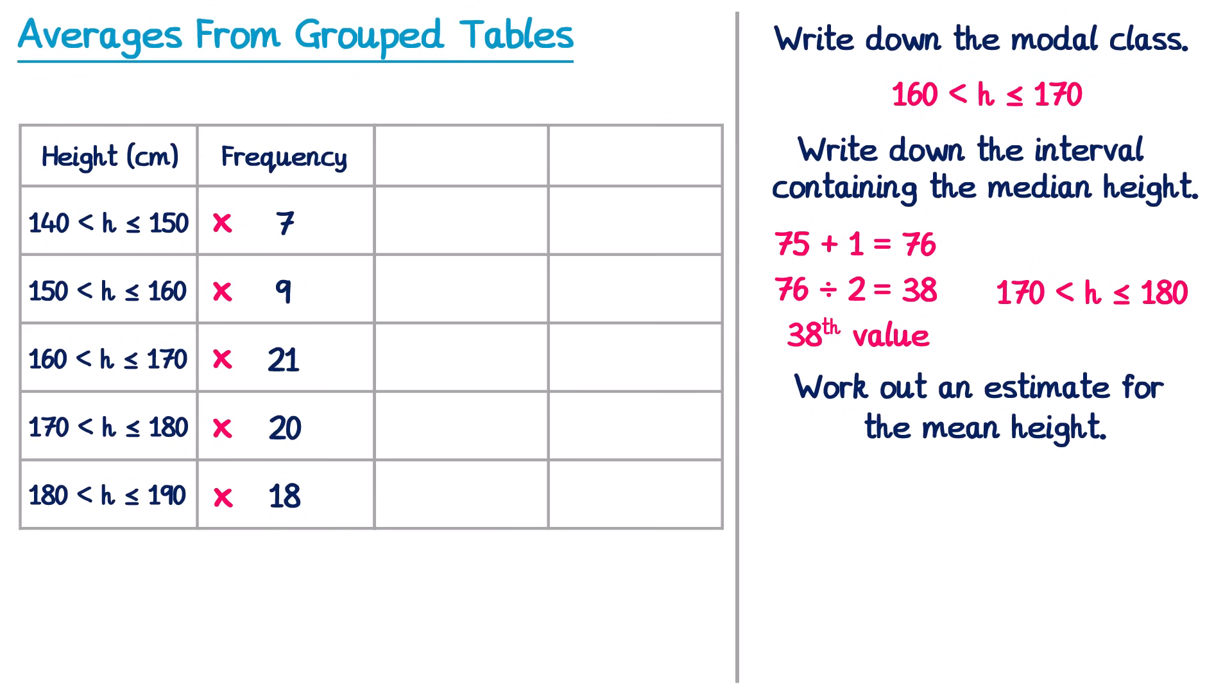Now since we don't know the actual heights of the people in that interval, we just know they're from 140 to 150, the most sensible thing to do is just assume that they're all in the middle. So we're going to assume that everyone in that interval actually has a height of 145, because that's halfway in between 140 and 150. So the extra column that we create is called the midpoint column.